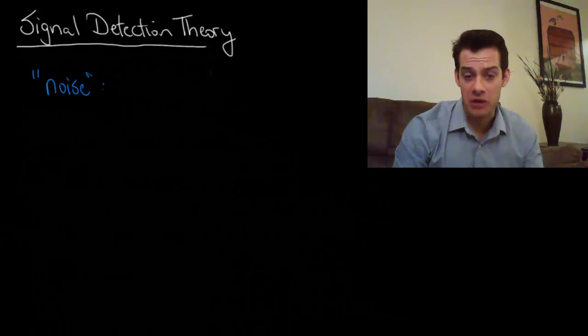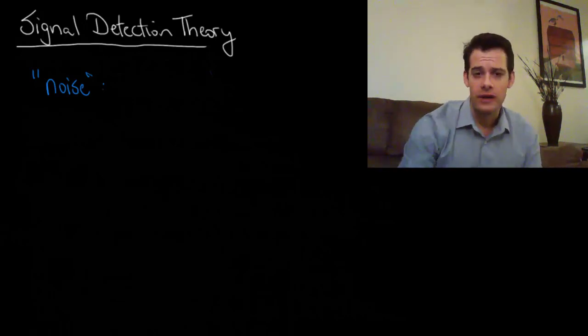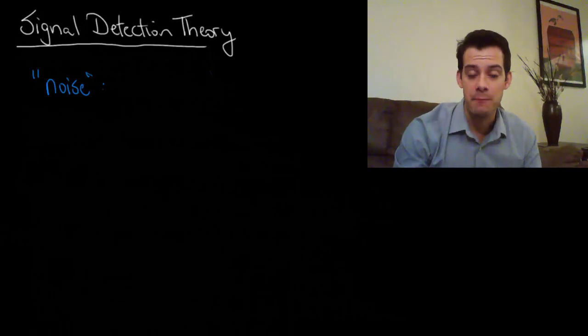In the last video we talked about psychophysics. We talked about these ideas of thresholds. So we had the absolute threshold, which was the minimum amount of stimulation that's needed for us to detect a stimulus. And then we talked about the just noticeable difference, or the difference threshold. And this was the amount of change that's necessary in a stimulus in order for us to detect that a change has occurred.